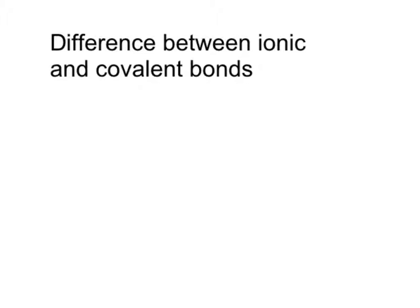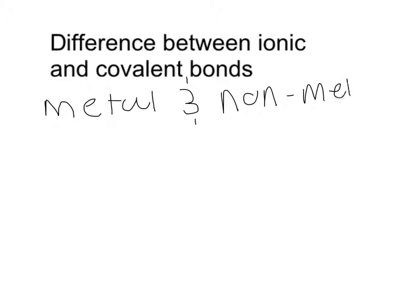Differences between ionic and covalent bonds. Ionic bonds form between two ions by the transfer of electrons, and also between metals and non-metals. Covalent is the sharing of electrons between non-metallic elements of similar electronegativity.